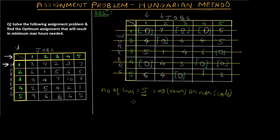Since the solution is optimum, the final answer is found using zero assignment — wherever there is a zero, that is our optimum assignment. For each row we select exactly one zero. Selecting a zero for one row means we cannot reuse it in another row or column. Going through all five rows and selecting one zero each, we mark five different zeros — one per row and one per column.